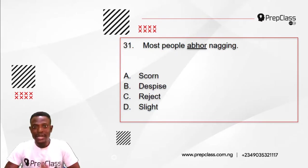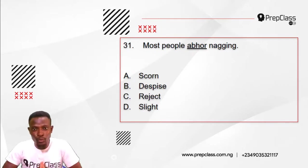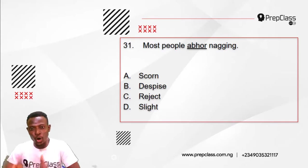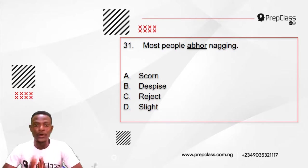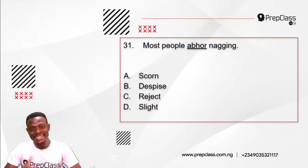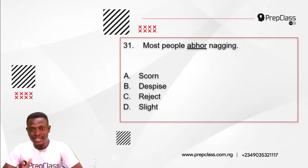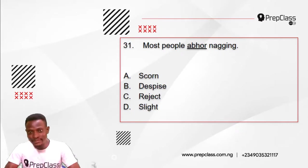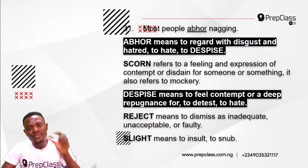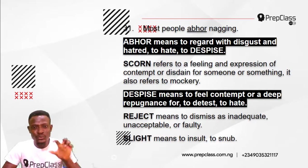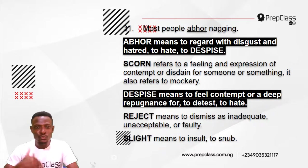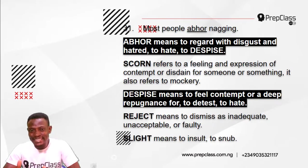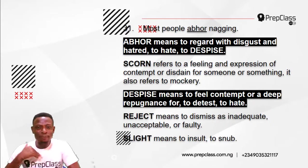Question 31: Most people abhor nagging. The underlined word is 'abhor.' We are to select the option nearest in meaning to 'abhor.' Option A: scorn. Option B: despise. Option C: reject. Option D: slight. The word 'abhor' means to regard with disgust and hatred — to hate or to despise. Most people hate nagging; most people despise nagging.